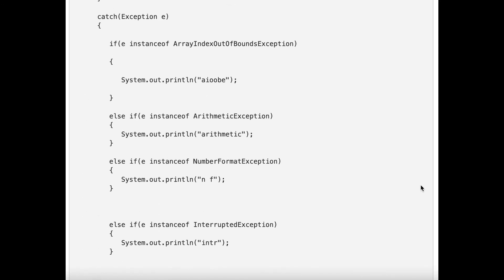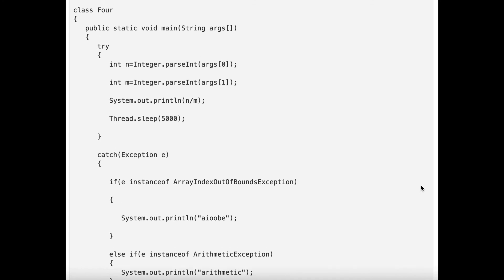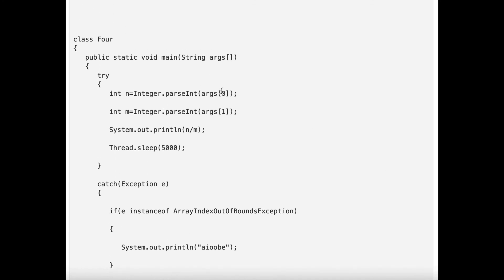If you will pass like 10 as the first argument on the command line, then second argument is 20, it will give you some value. But if you are passing 10 and then 20, 30, 40 like that, it will give you array index out of bound exception.